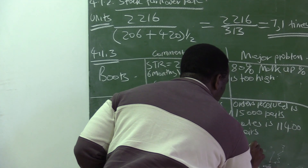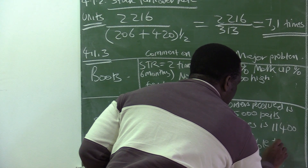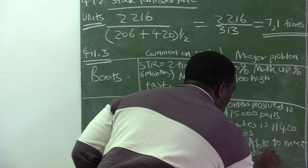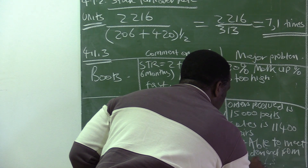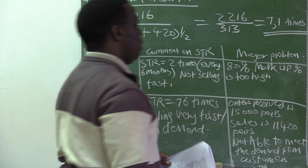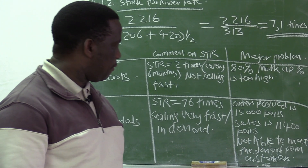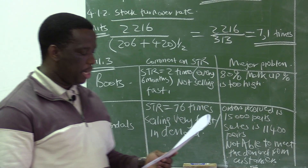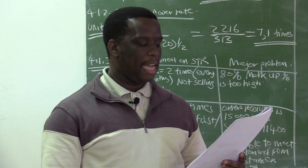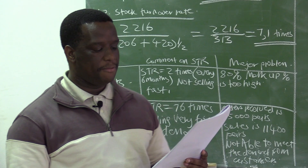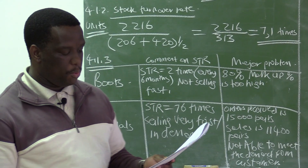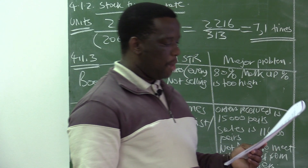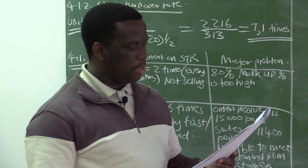However, the matchup problem for sandals is that orders received from customers is 15,000 pairs, but sales is only 11,400 pairs. This is a problem — we are not able to meet the demand from customers. Even looking at items on hand at year end, we are only left with 150 pairs. We need to make sure we have enough stock available to meet our orders from customers.